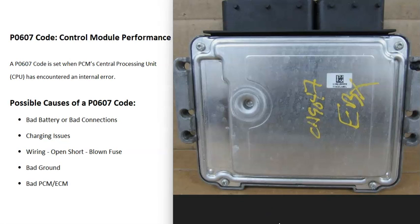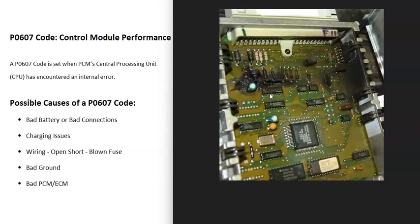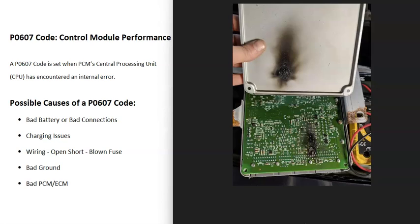The last thing on the list is that there's just a bad PCM or ECM — the computer has simply failed and needs to be replaced. Sometimes when these fail they actually get burnt spots on the board, so if you can locate your PCM or ECM you can check to see if you smell anything burnt. You can even open them up and check inside — if you see a burn spot, you know for sure it's failed. That said, sometimes these go bad with no burn spots at all.